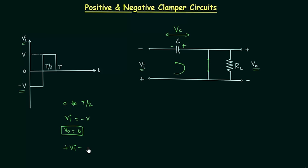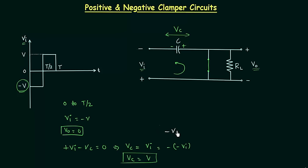I will use Kirchhoff's voltage law to obtain Vc: plus of Vi minus of Vc is equal to 0, which implies Vc is equal to Vi. We have already considered Vi to be negative, so Vc equals minus of minus Vi, and since minus Vi equals minus V, we get Vc is equal to V.